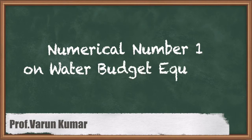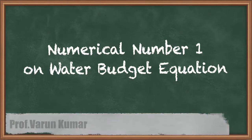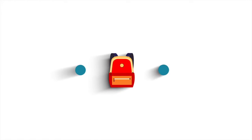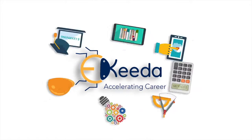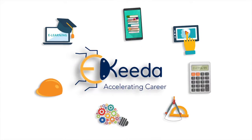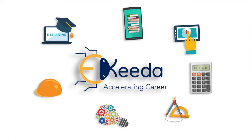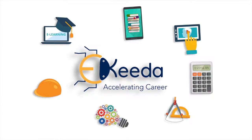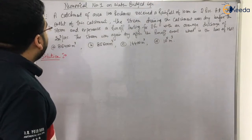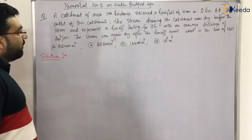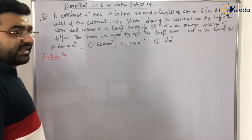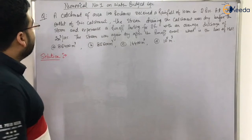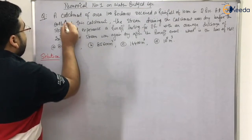Subject: Hydrology. Chapter: Hydrology Basics. Topic: Numerical one on the water budget equation. Now let us solve the first numerical of the water budget equation. It's a very easy numerical.